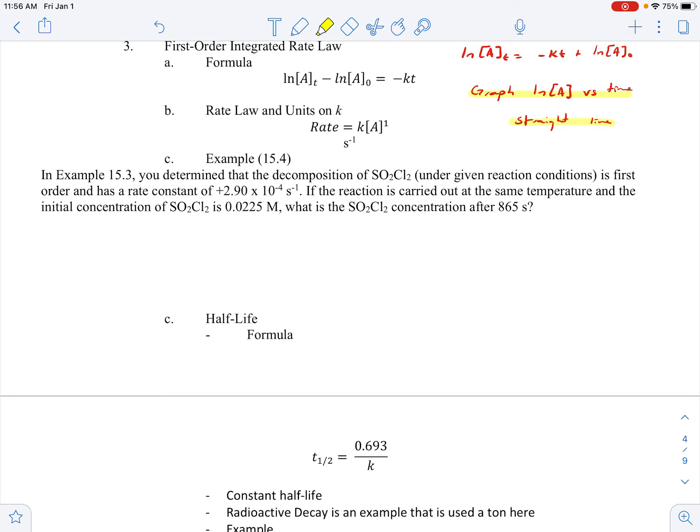Natural log of [A]_t, that's what we're trying to find. So I'm just going to leave that as is. And then we've got minus natural log of, we started at 0.0225, and then is equal to negative kt. Well, there's our k, 2.90 times 10^-4, and then our time is 865. And then we can just plug it in and solve. And we could also move this to the other side if we wanted. That would probably be helpful. That equal sign shouldn't be there. We'll just put it down here, plus natural log of 0.0225.